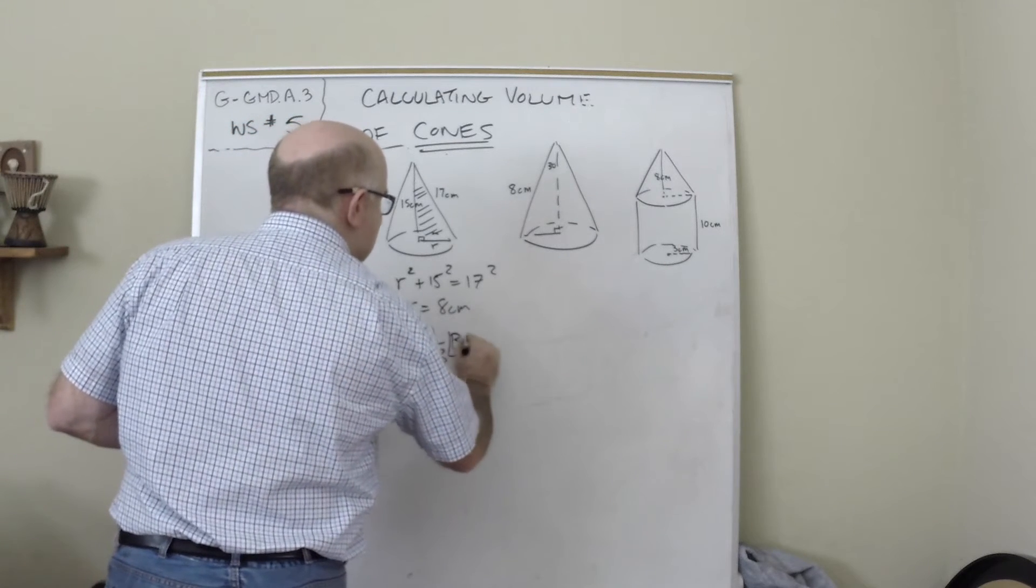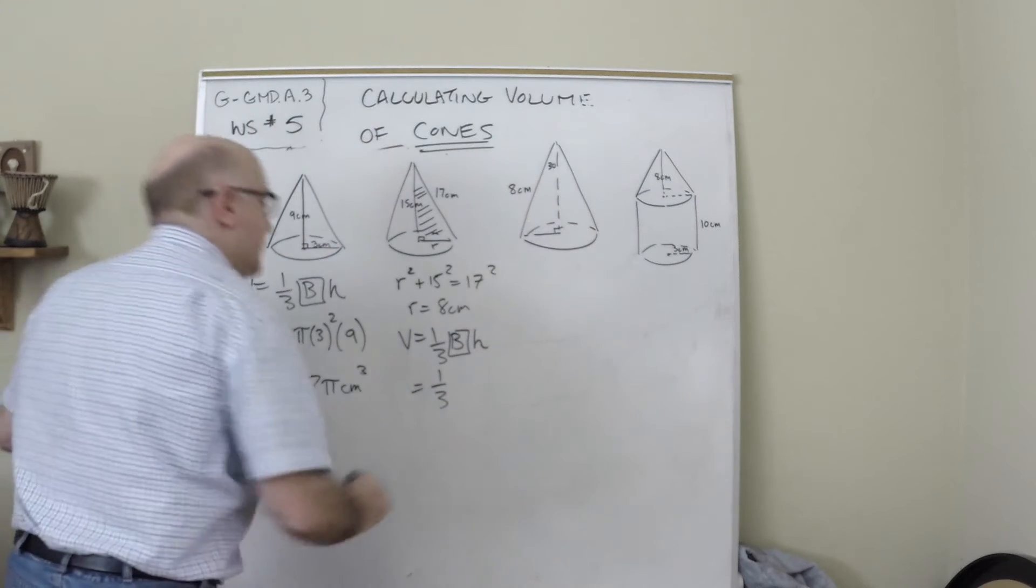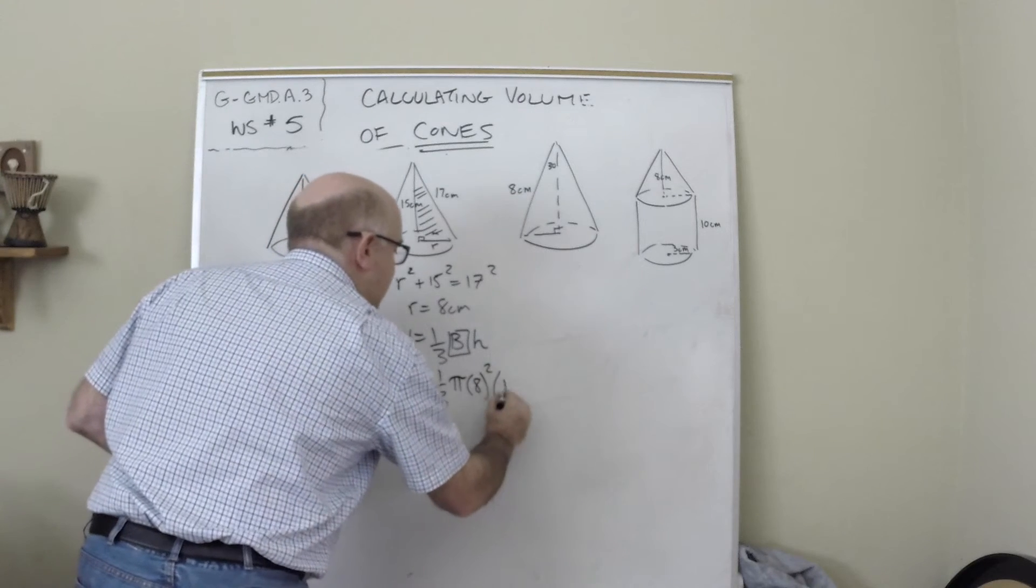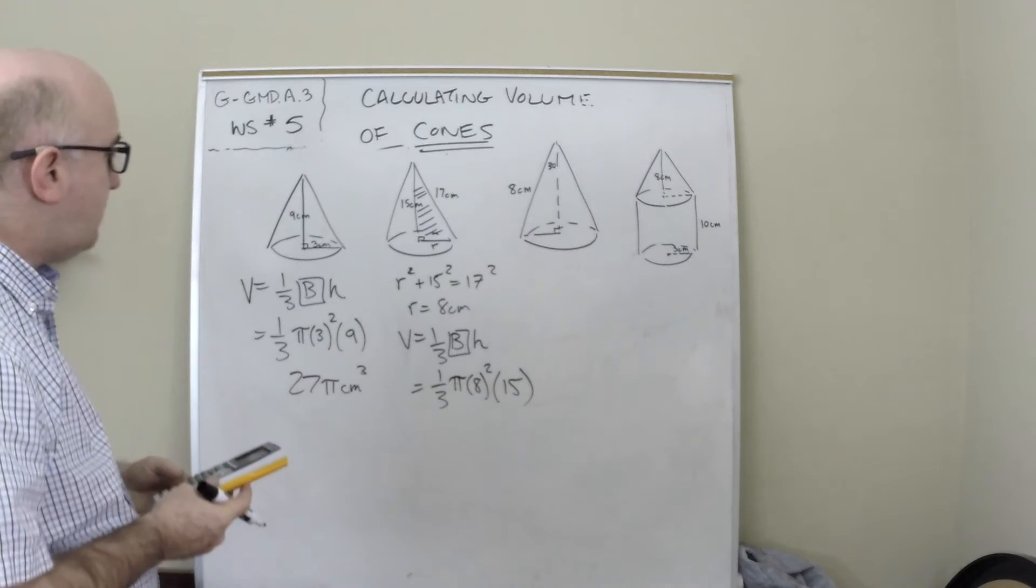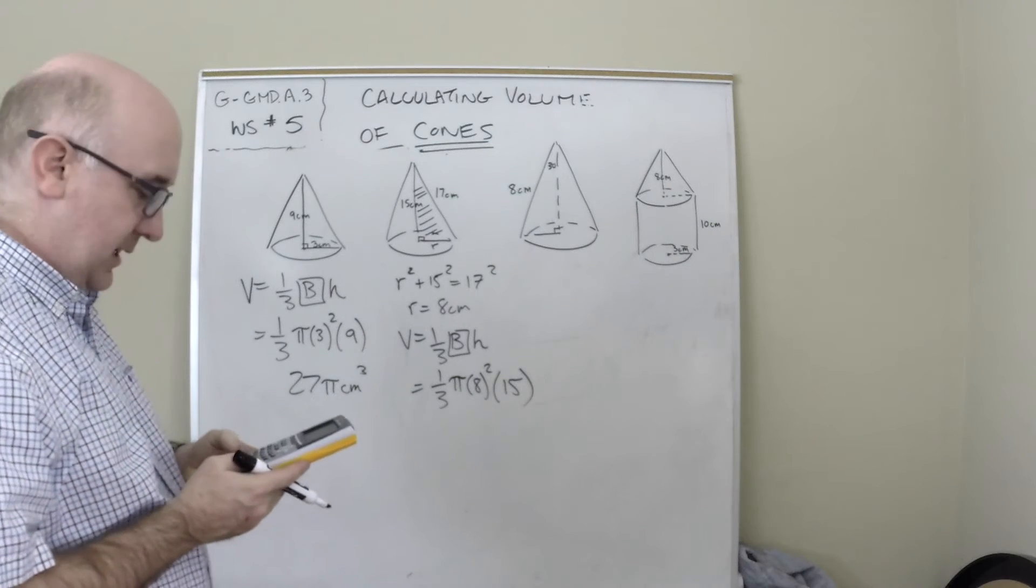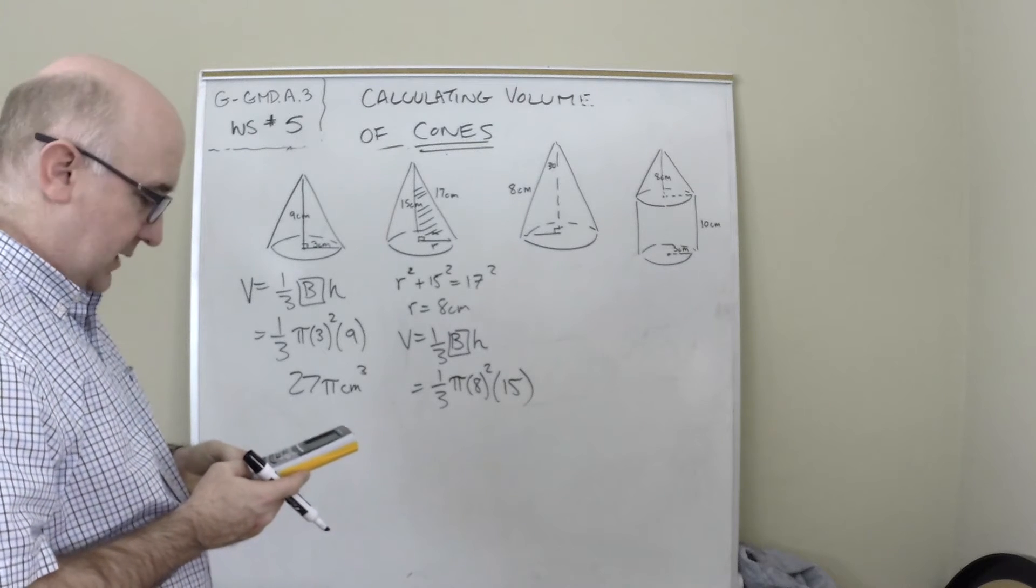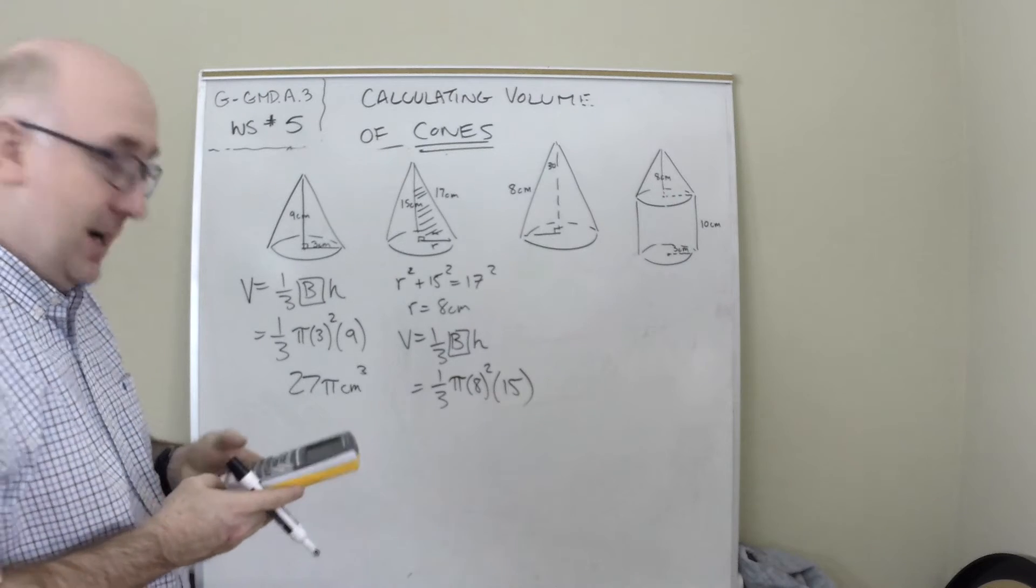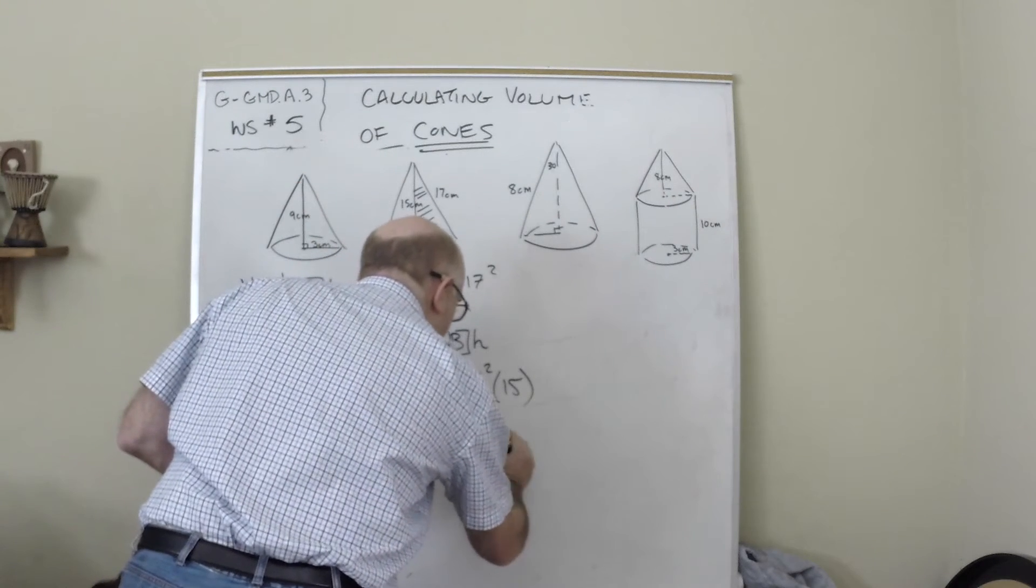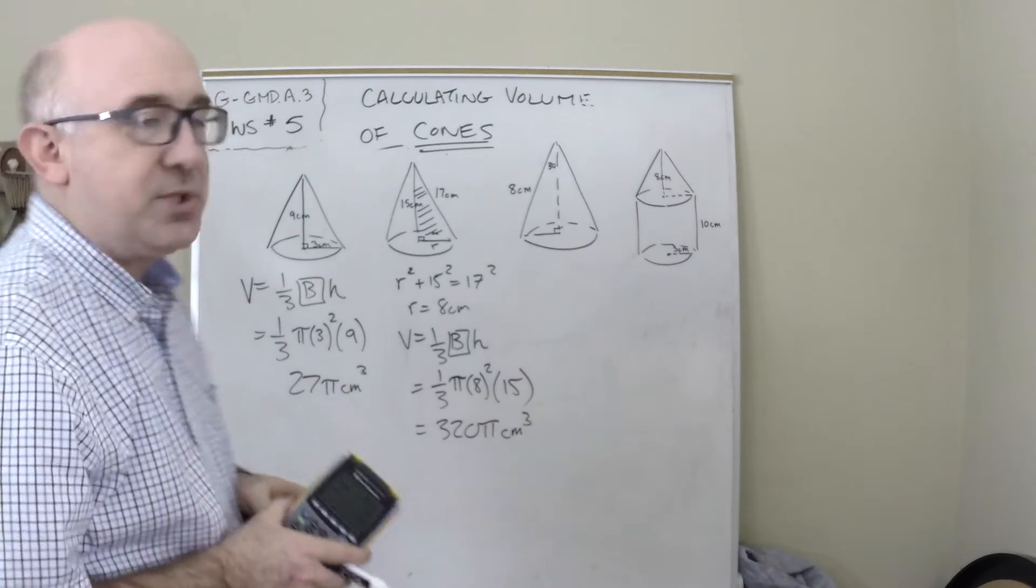We get one-third, the base now is πr² and the height is 15. So we take 64 and multiply it by 15 and divide by - oops I've got an error here - 15 times 64 and divide by 3, and I get 320π centimeters cubed.